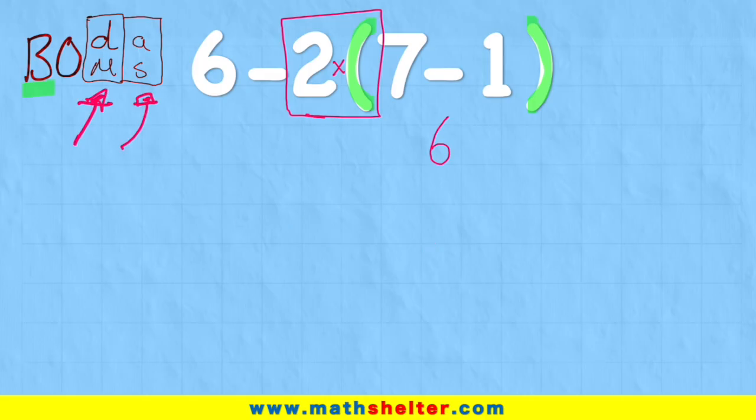So now I have to solve that part. So what I actually have is two multiplied by what was in the bracket, and two multiplied by six leaves me with 12.